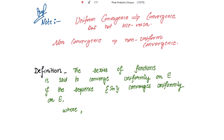Another definition: for the series of functions, the series summation f_n where n goes from 1 to infinity is said to converge uniformly on E if the sequence S_n converges uniformly on E, where S_n is the finite series of functions: f1 plus f2 plus f3 up to f_n — the nth partial sum.